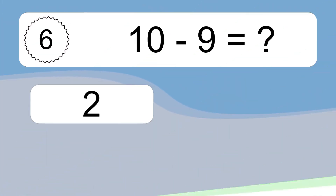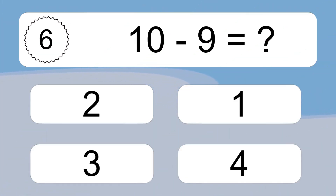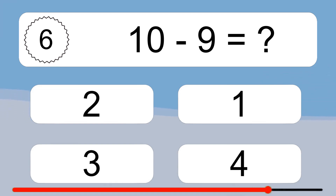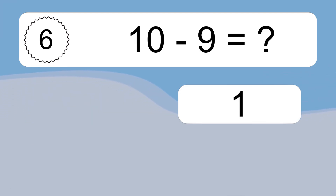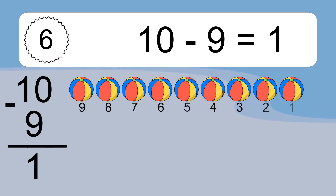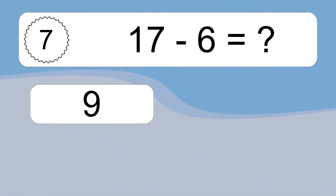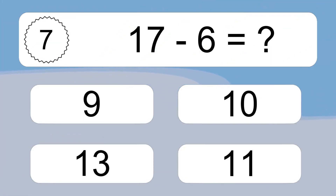10 minus 9 equals what? 10 minus 9 equals 1. Let's count it: 9, 8, 7, 6, 5, 4, 3, 2, 1.